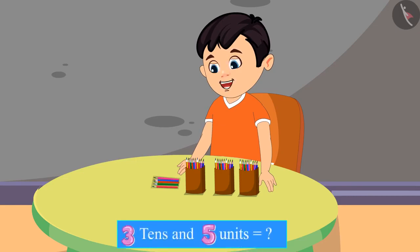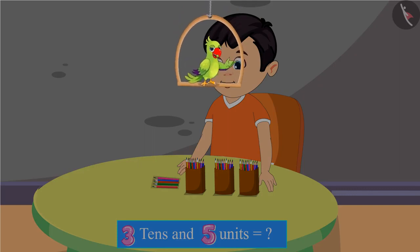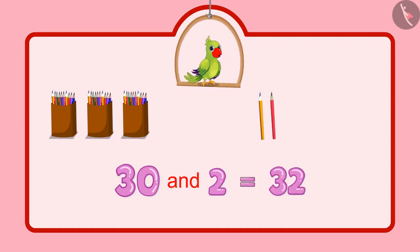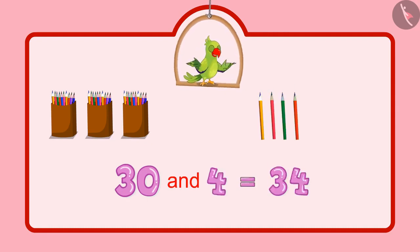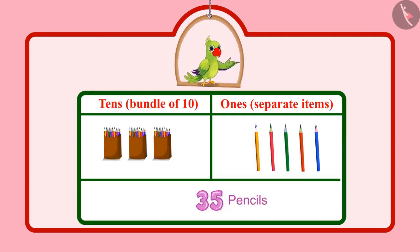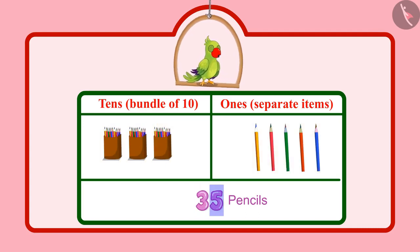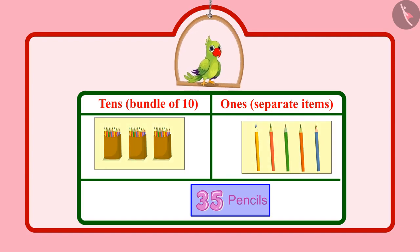So, 30 pencils meaning 30 units, with 5 more pencils, so 5 units more. Children, can you tell me how many pencils does Chotu have now? Chotu had 30 pencils, followed by 31, 32, 33, 34, 35. So Chotu has 35 pencils in total. In 35 pencils, 3 means 3 tenths and 5 means 5 units, which means total 35 pencils.